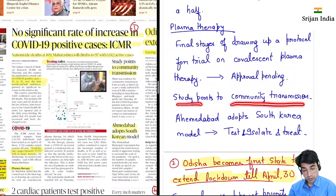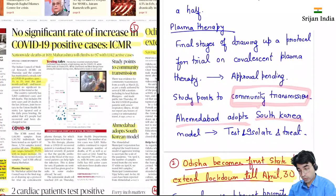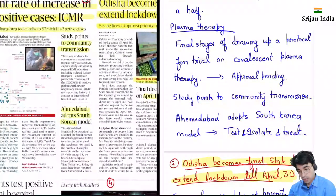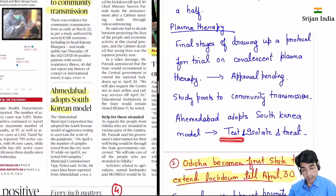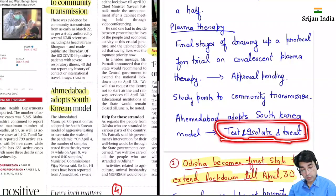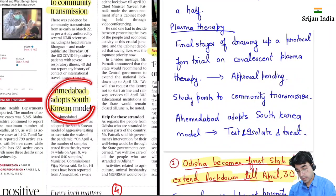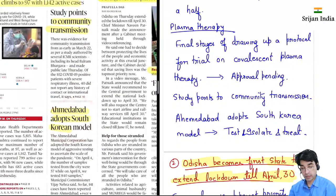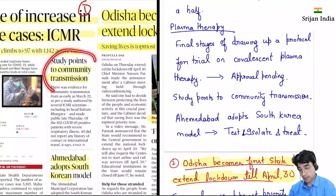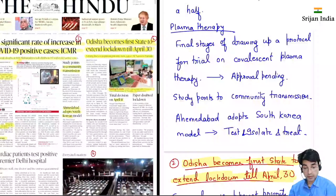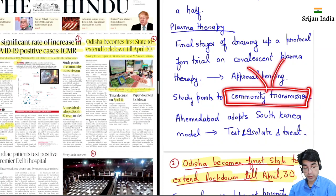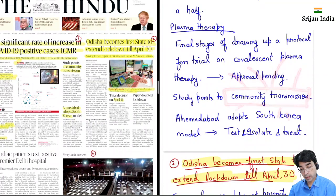Study points to community transmission. Ahmedabad ne adopt kiya hai South Korea ka model — test, isolate and treat. Sab ko test karo, jo infected hain unko isolate karo, aur unko treatment provide karo. Toh Ahmedabad mein bhi kaafi actively is model ko adopt kar raha hai. Community transmission ke bhi kuch cases ab dikhne ko mil rahe hain — yeh bahot dharne wali baat hai.